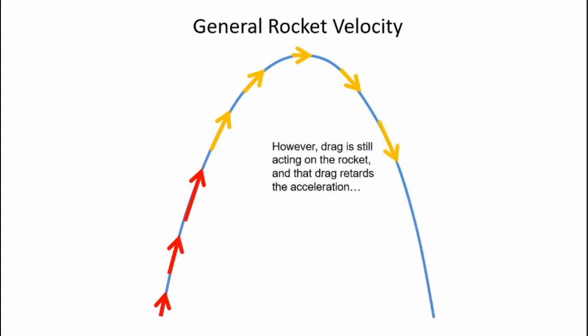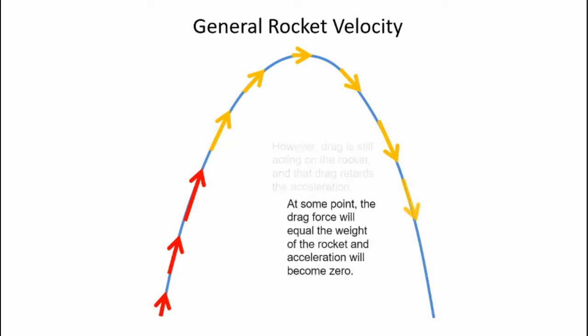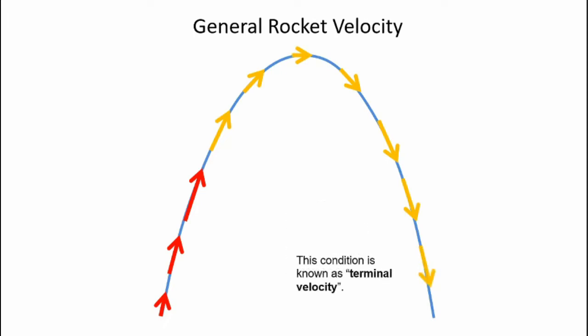As the rocket speeds up, the drag force increases. In many cases, the drag grows to a value that's equal to the rocket's weight and acceleration becomes zero. This is known as terminal velocity. After this point, the rocket will not speed up anymore.